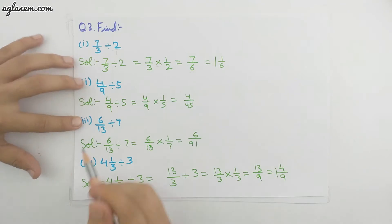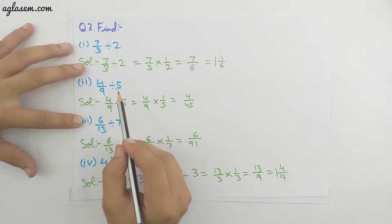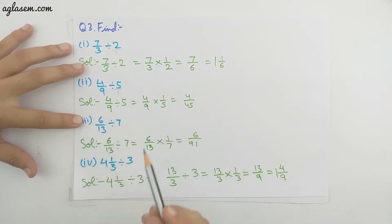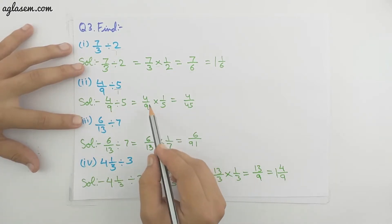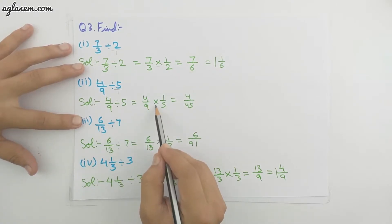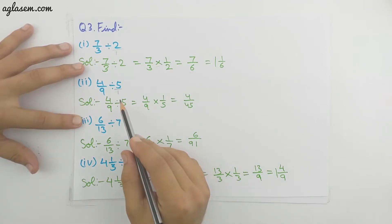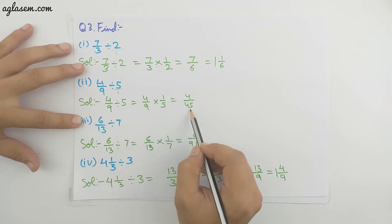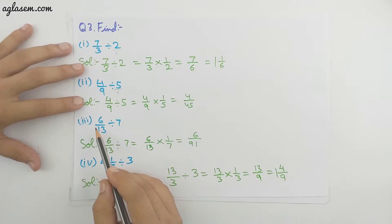Second part: 4/9 divided by 5. We write 5 as 5/1, then the divide sign changes to multiply and 5/1 becomes 1/5. Multiplying 4/9 by 1/5 gives 4/45, which is a proper fraction.